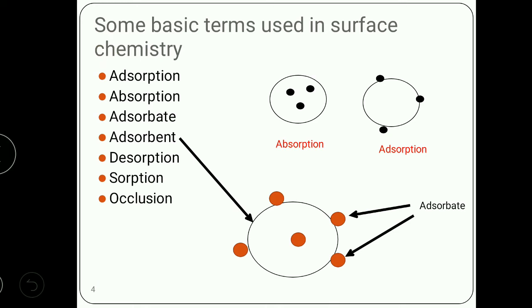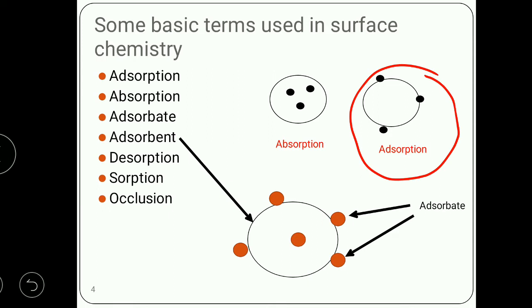Now some basic terms used in surface chemistry. Adsorption is a surface phenomenon where gas molecules are adsorbed on the surface of the solid. Whereas absorption is a bulk phenomenon where gas molecules are absorbed on the surface as well as into the solid.